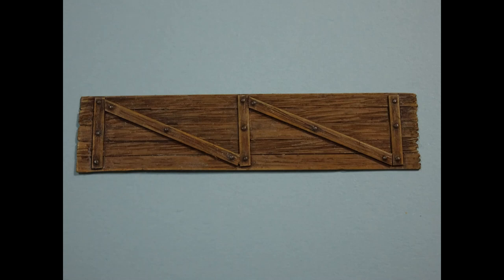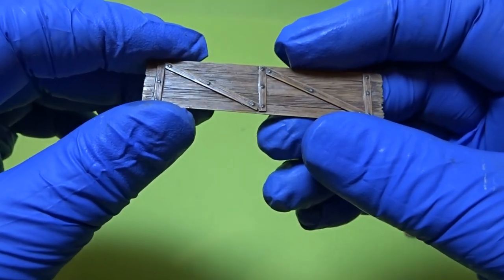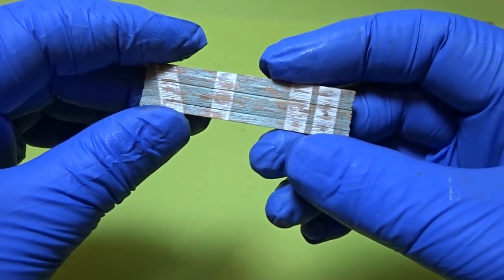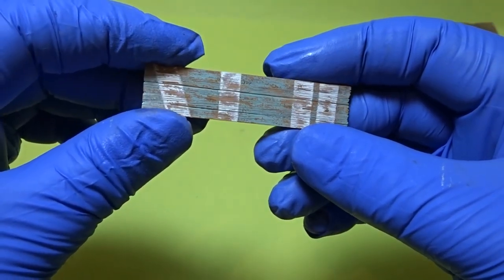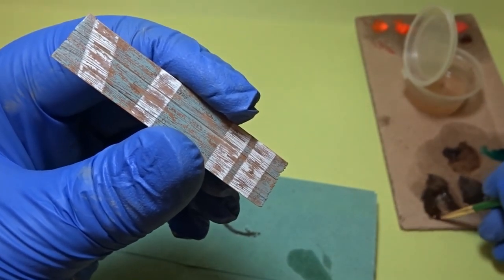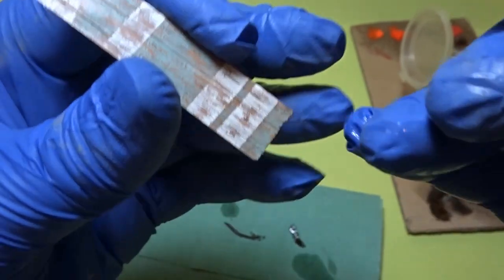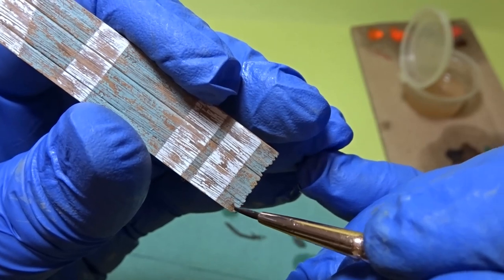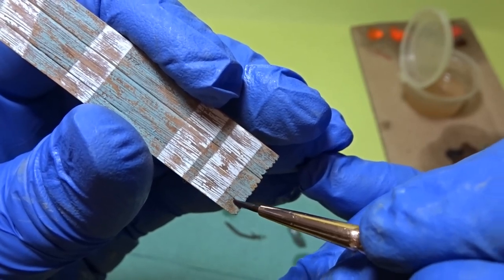However if you don't want to do oil paint and you're happy with the look that you've got, then that's fine. But what we want to do is just add a little bit more texture and weathering. As you can see the matte varnish will protect the acrylic work that you've done.